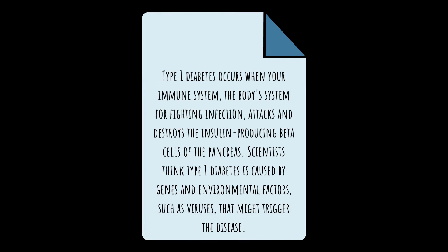Type 1 diabetes occurs when your immune system, the body system for fighting infection, attacks and destroys the insulin-producing beta cells of the pancreas. Scientists think type 1 diabetes is caused by genes and environmental factors such as viruses that might trigger the disease.